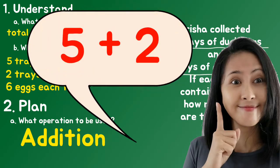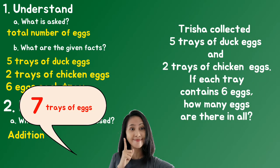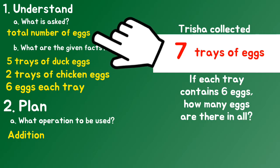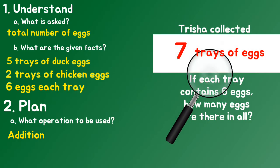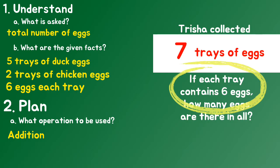Addition! We need to add the trays together. Five trays of duck eggs plus two trays of chicken eggs gives us seven trays in total. Now, what does this tell us? Yes, we need to multiply.